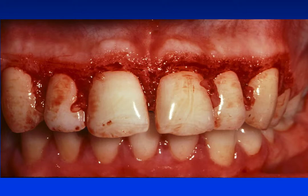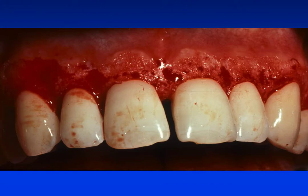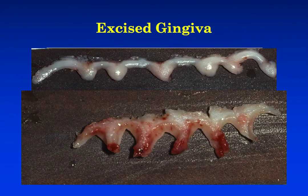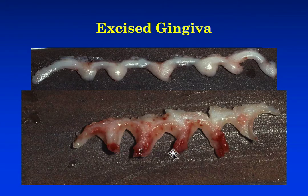We do have tissue tags, however, which we need to remove. For that, we come back in with finer surgical blades and actually sculpt and create what we want in our final architecture for this patient. This is the gingiva that was excised from this patient — you can see the outer aspect as well as the inner aspect. It's interesting to note how inflamed the tissue is as it moves into that interproximal area.